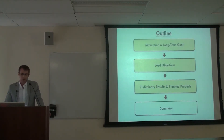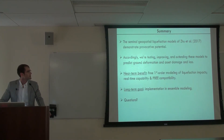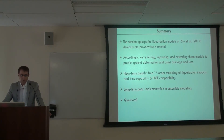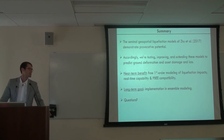To summarize: the performance of geospatial models is really quite surprising and provocative — I can't emphasize that enough. Accordingly, we're testing, improving, and extending these models to predict infrastructure damage and loss. The very near-term benefit will be first-order modeling of impacts with real-time capability and performance-based compatibility. In the long term, the vision is to include these models within an ensemble modeling approach. Thank you.